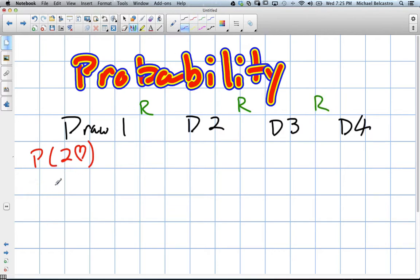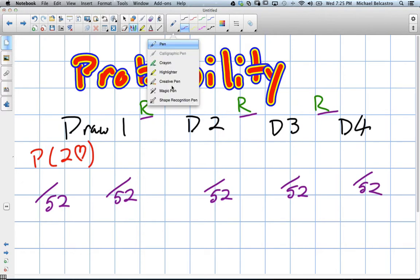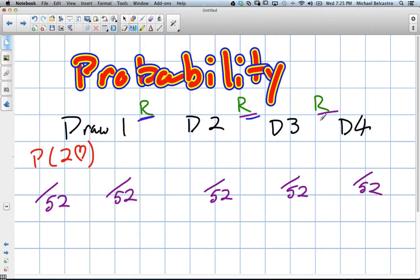And we know that a normal deck has 52 cards. So because it's replaced every single time, every time we draw, we're technically drawing at a 52. So all of these draws are out of 52 because the card is replaced every single time. It's put back in the deck. And they want us to draw exactly two hearts.